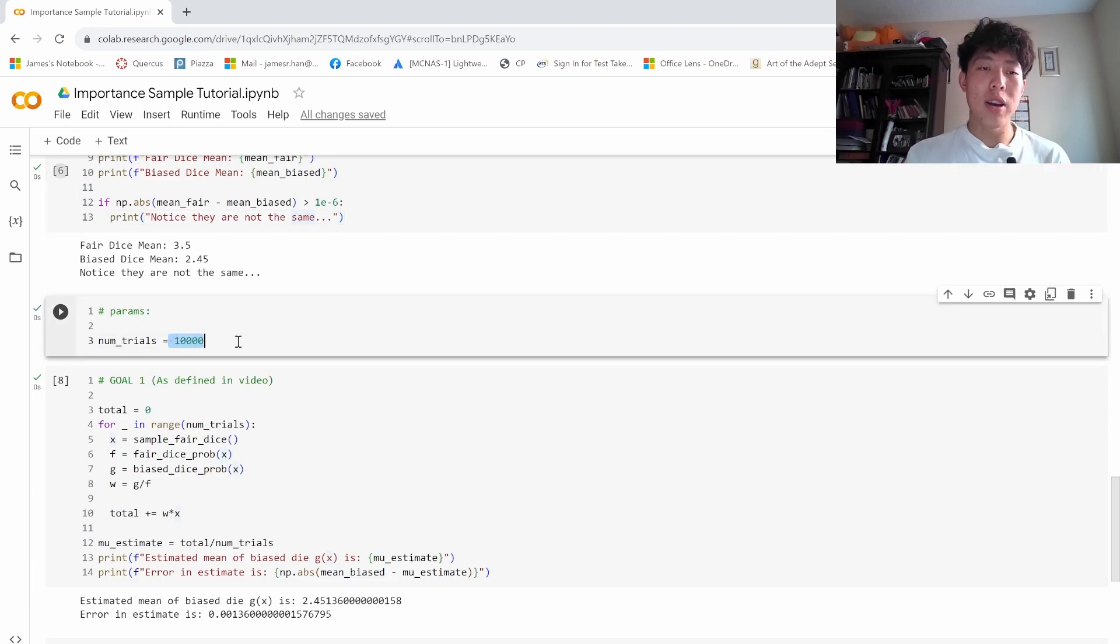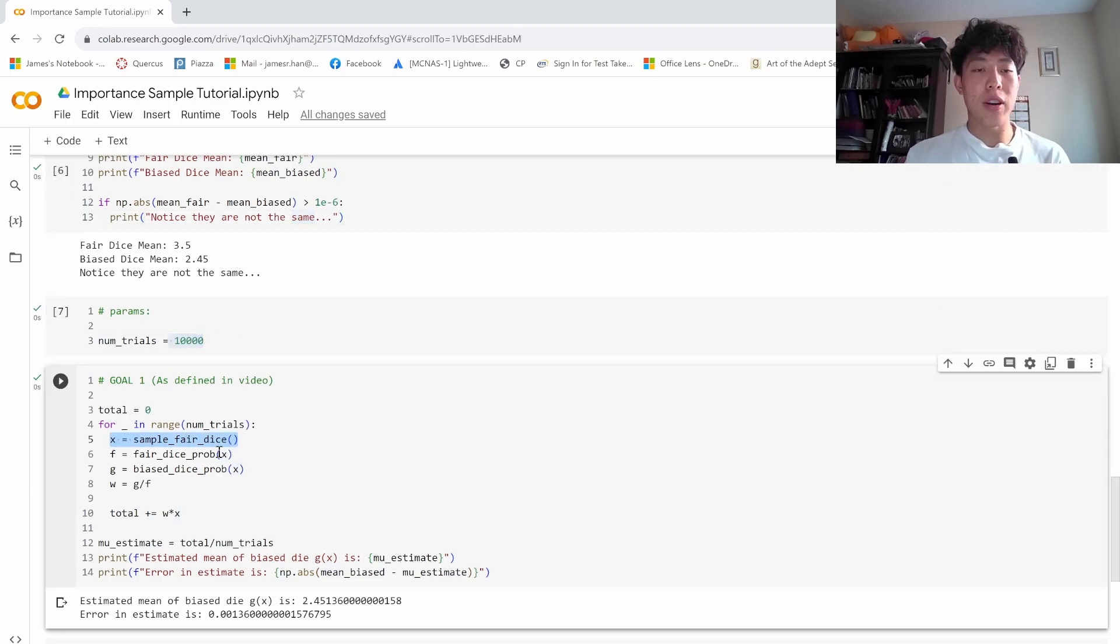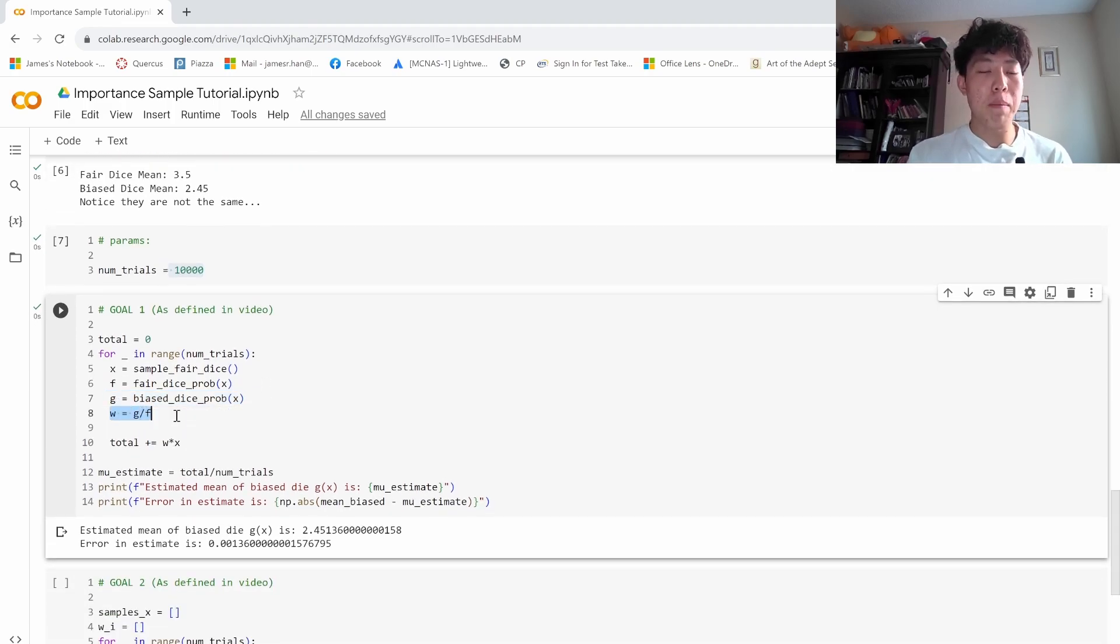And what are we going to do? We're going to sample now. So we have 10,000 samples that we want to go through, and we're going to sample the fair dice first, and then calculate the probability of this happening under the fair dice, then calculate the probability of this happening under the biased dice, then we calculate that importance factor, g over f, and then we simply add the total w times x.